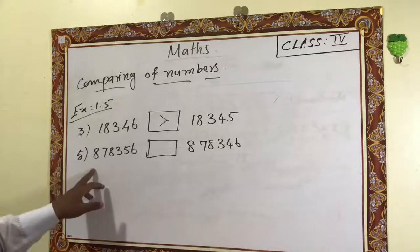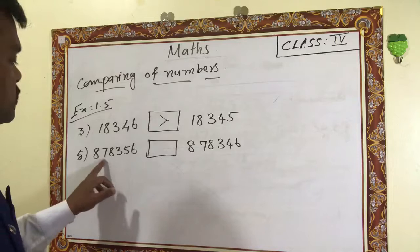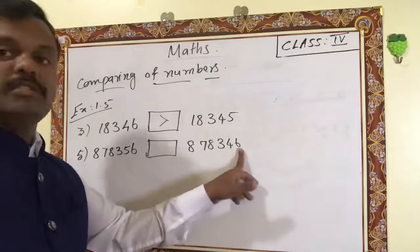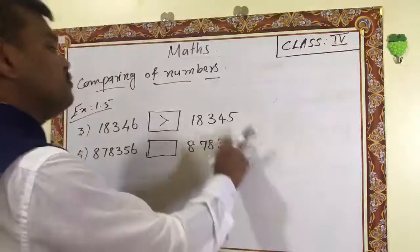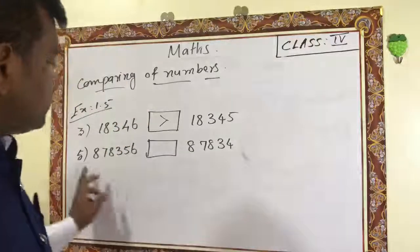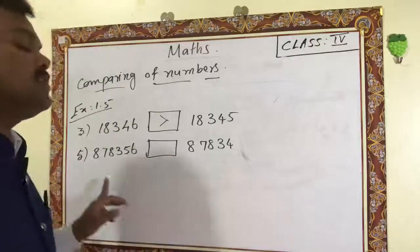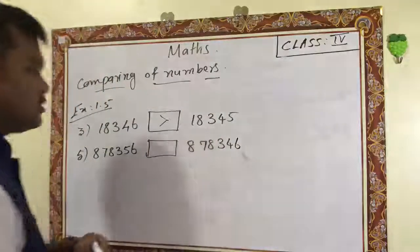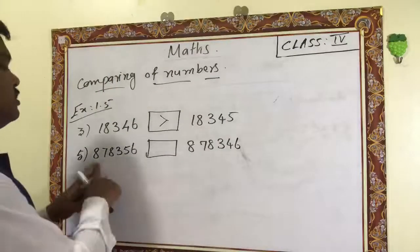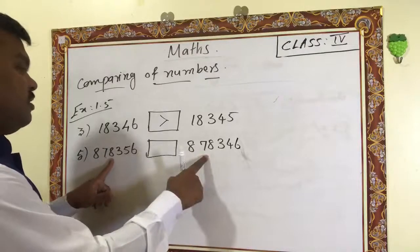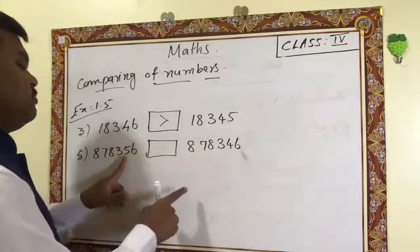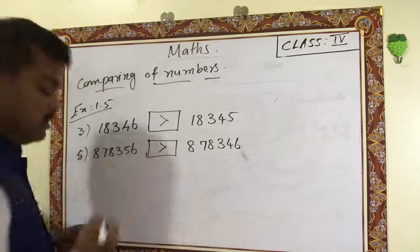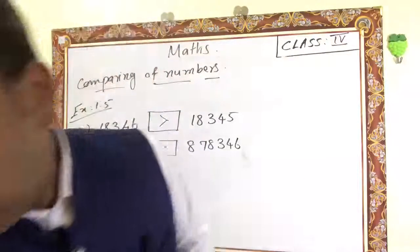Another example from the book, question a5: count digits — six-digit number and six-digit number. Since digits are the same, check leftmost: eight, eight, seven, seven, eight, eight, eight — they match. Then three, three — same. Then five versus four — five is greater, so that is the greatest number. This is how comparison of numbers works.